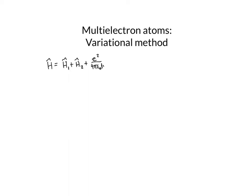If we did not have this repulsive term, then we could write a separable Hamiltonian, and we could separate it into a solution for electron one and a solution for electron two. The solution for electron one would be exactly the hydrogen atom solution, but with a larger charge on the nucleus. And the solution for electron two would be exactly like the hydrogen atom solution, but with a larger charge on the nucleus. So we already know what those solutions look like.